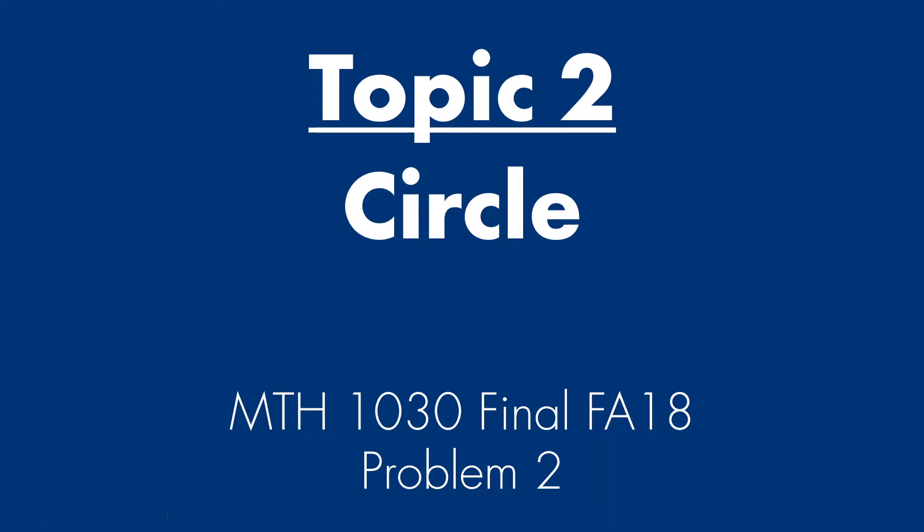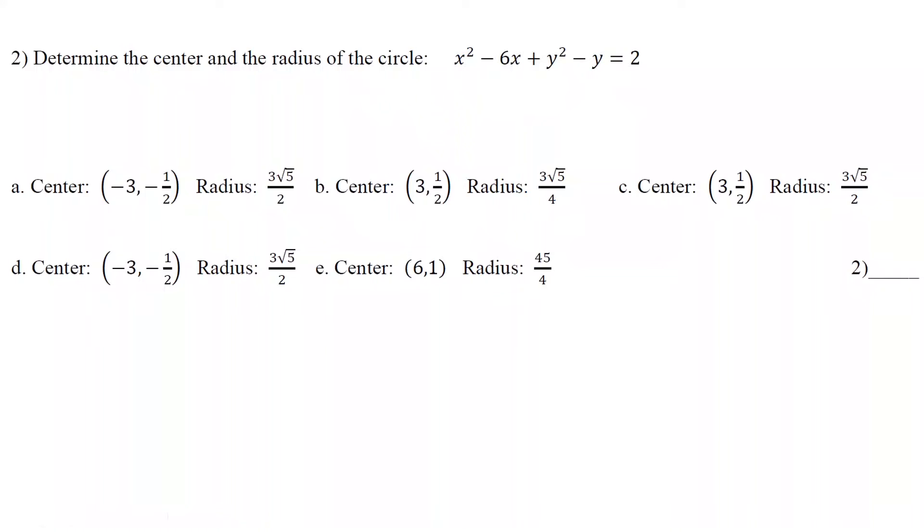It's appearing sometimes even multiple times on one test. So we're going to look at MTH 1030 final FA 16 problem 2. Here we need to determine the center and the radius of the circle. This is the circle. How to do this?